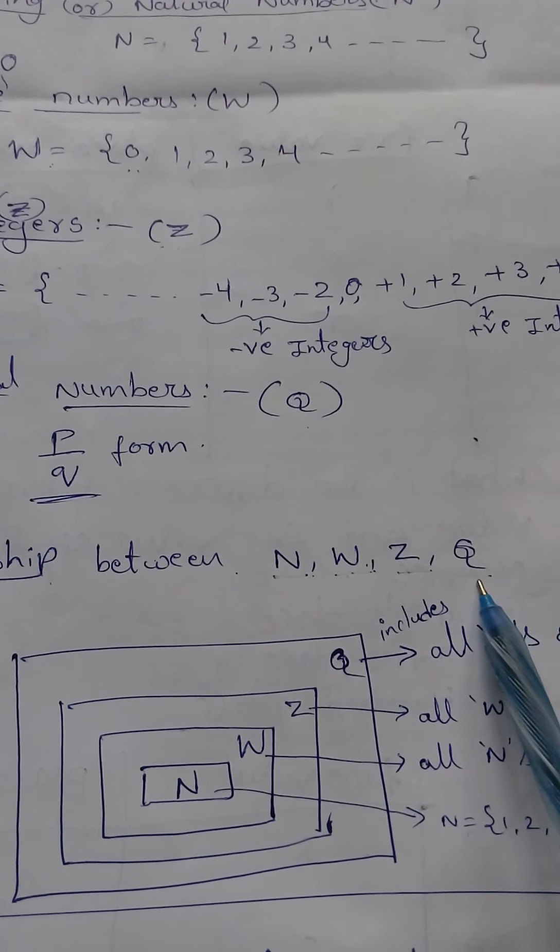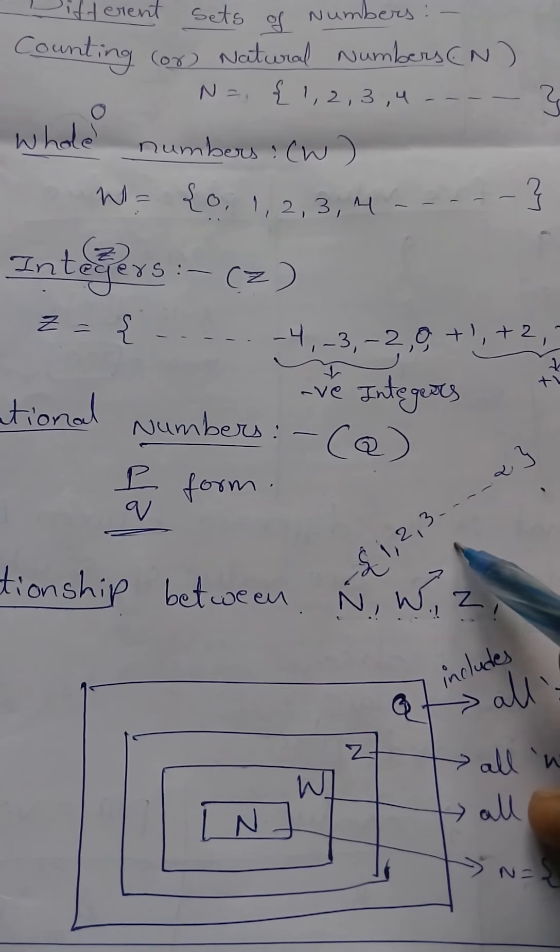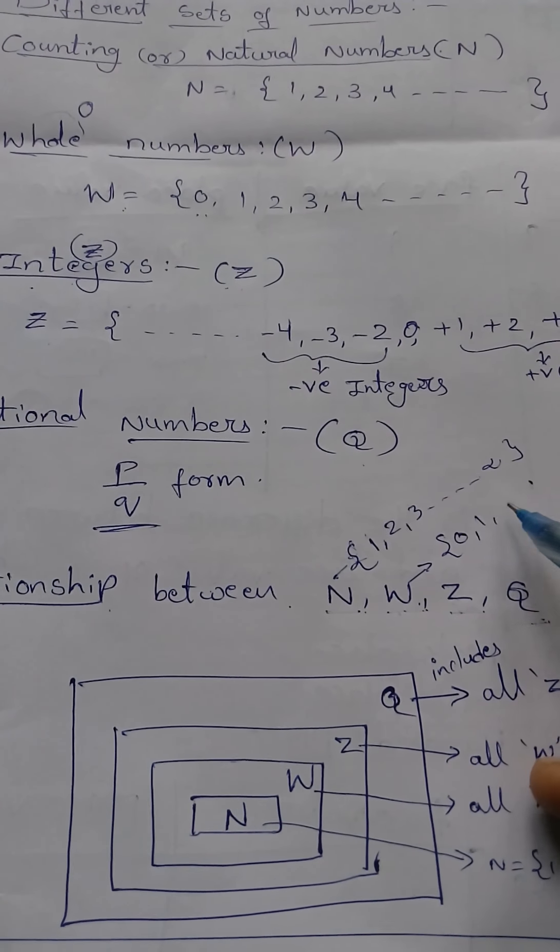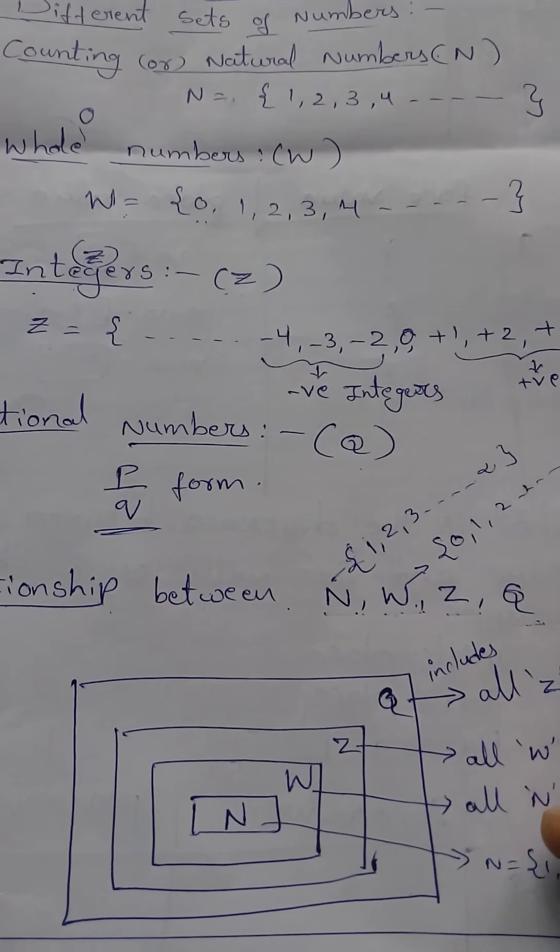I already told you N means 1, 2... Number starts with 1, 2, 3 and infinity. And W means number starts with 0, 1, 2 to infinity.